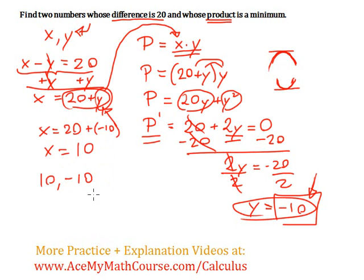But will that give us actually a minimum product? Well, let's check it out. So the product of 10 and negative 10 is negative 100. So now let's try different numbers. Let's say that I take maybe 11 and negative 9 instead.